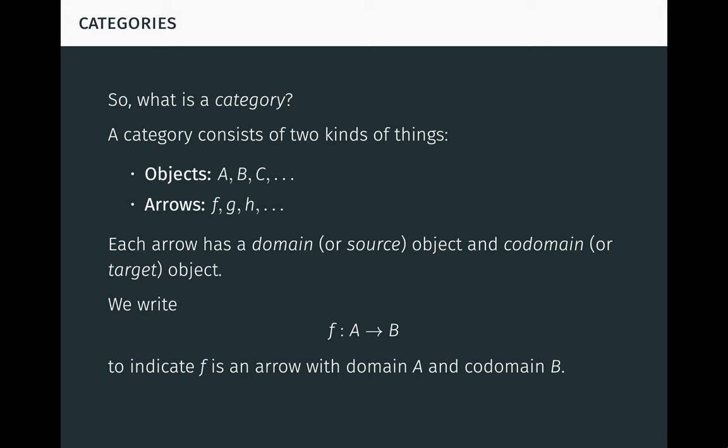Importantly, in this definition, we don't say what the objects and arrows are. We only specify the properties they must satisfy to constitute a category. This is what makes the definition abstract.